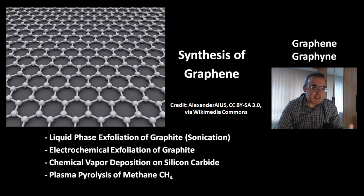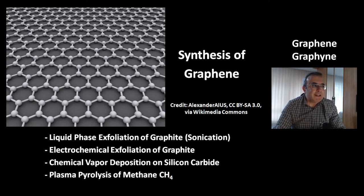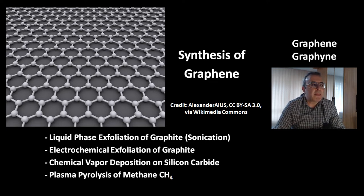Obviously with the scotch tape technique you cannot make large amounts of graphene. These are some of the ways to make big amounts: liquid phase exfoliation of graphite with sonication or electrochemical exfoliation, chemical vapor deposition on silicon carbide, or plasma pyrolysis of methane CH4.